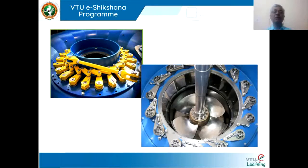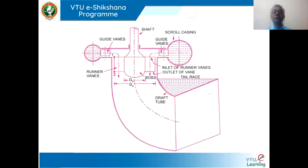The wicket gates can be controlled by means of a hydraulic jack arrangement — you will have two shafts, and we have seen their operation through a video. The water moves in this direction; therefore, it is called an axial flow turbine. The input is in this direction as well as the output is in this direction. This one is called the draft tube — it is the exit of the Kaplan turbine.